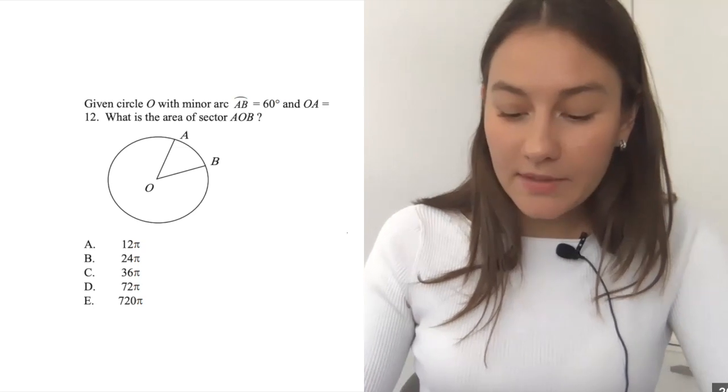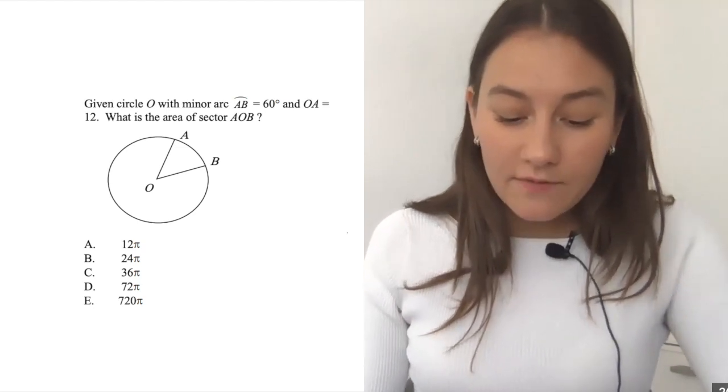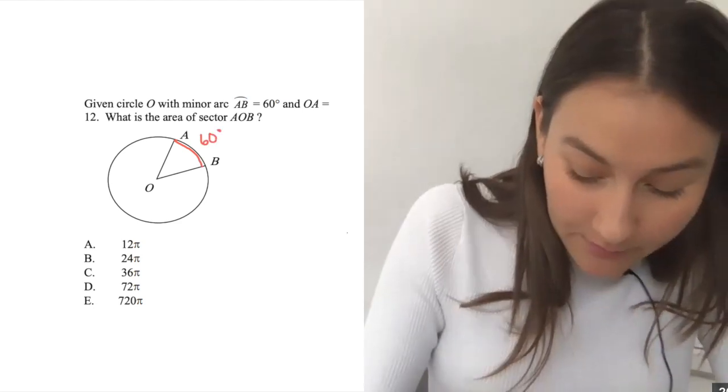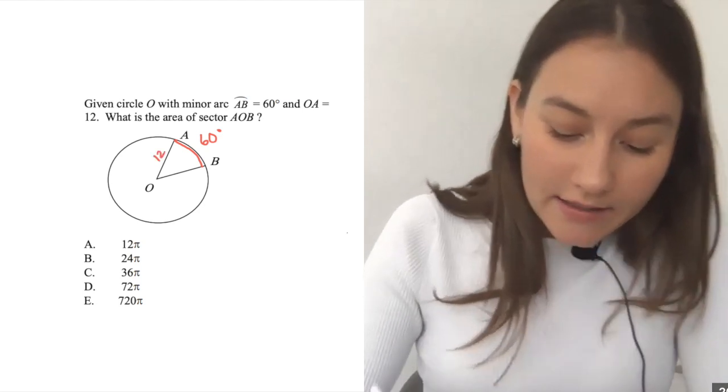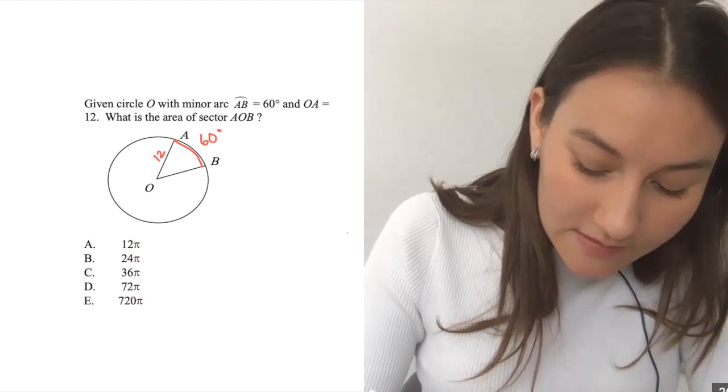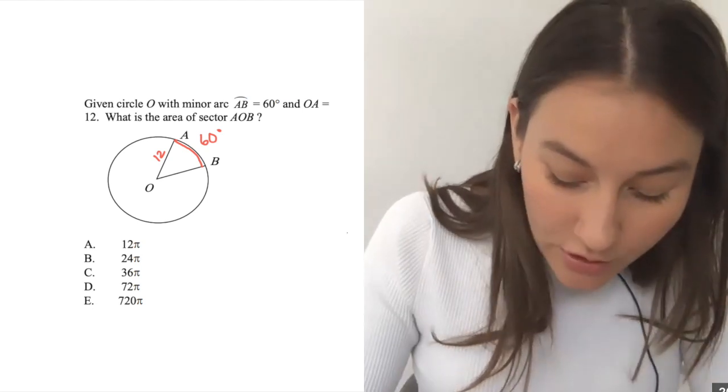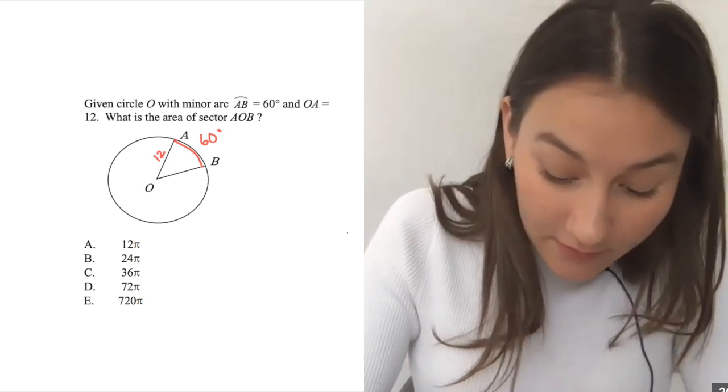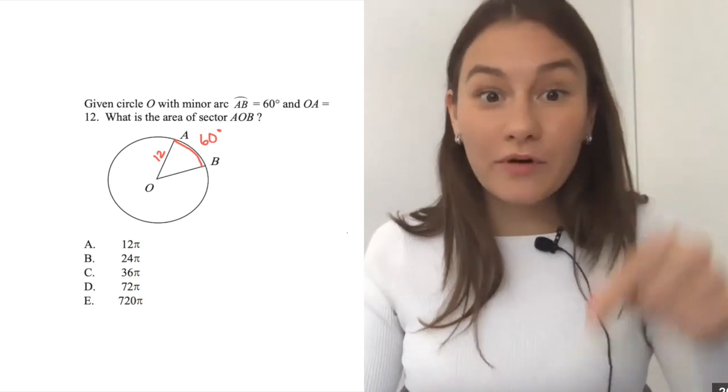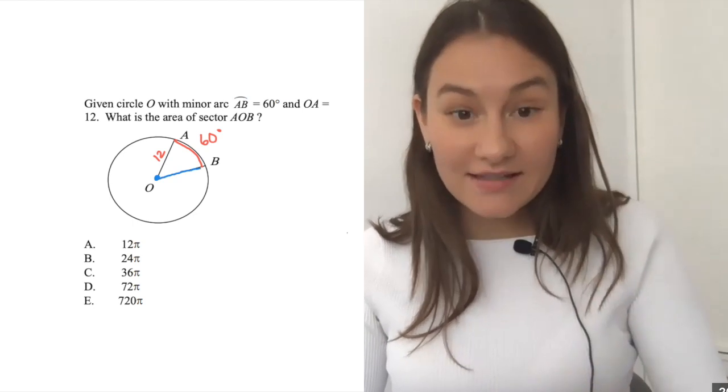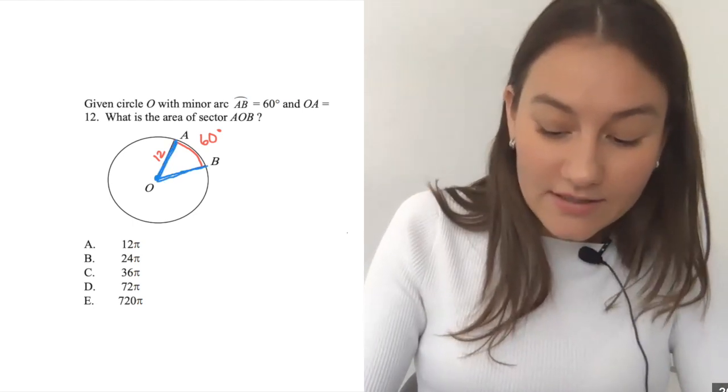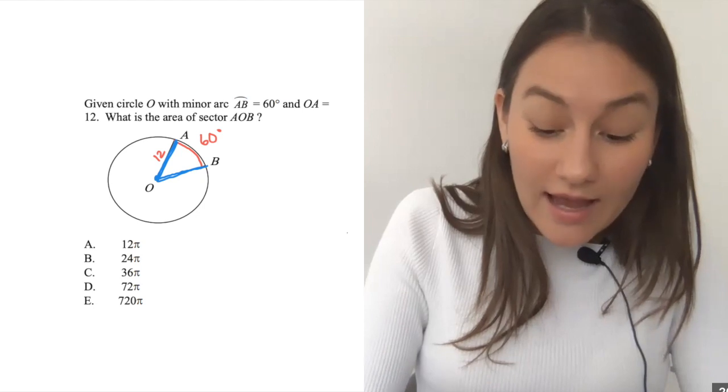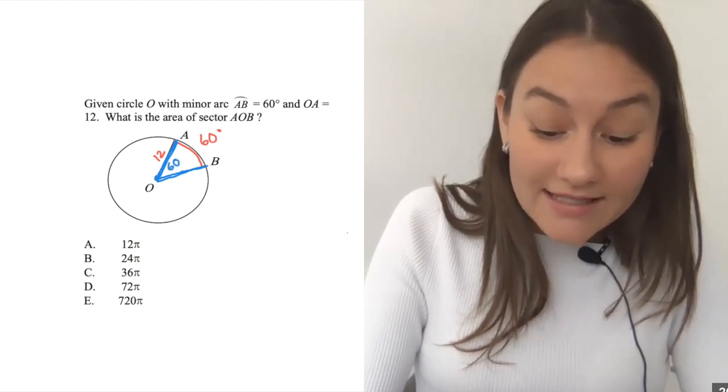So let's take a look at a problem here. We have given circle O with minor arc AB is equal to 60. So I'm just going to put that in my diagram right away. So AB is 60. And OA is 12. So OA is my radius. I know that's going from the center to a point. What is the area of sector AOB? So I'm looking for the area of this whole thing. Well, what's my problem here? I don't have the, I'm not given that angle on the center. But I know from my previous slides that this is a central angle, right? Angle O is your central angle. And a central angle is always exactly equal to the arc that it bisects. So angle O is going to be equal to that 60 degrees.